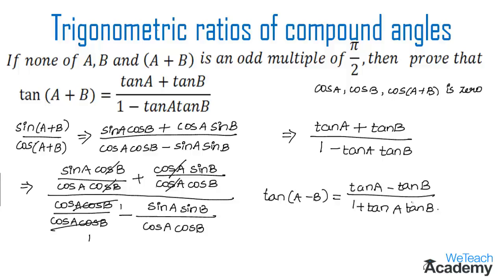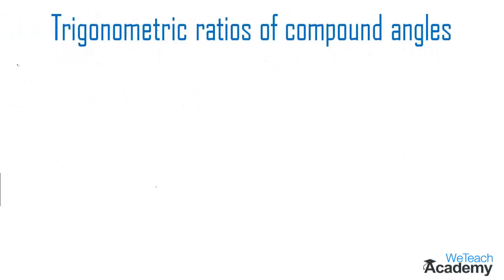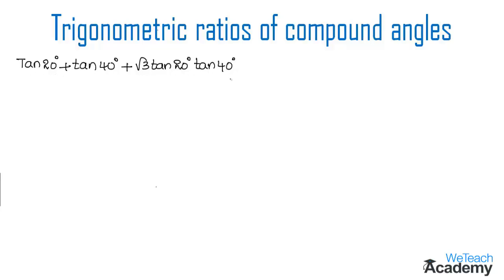Now let us proceed and discuss an example where we use the formula of tan(a+b) to find the result. The given example is: find the value of tan 20° plus tan 40° plus root 3 times tan 20° times tan 40°. We are given the degrees 20° and 40°.